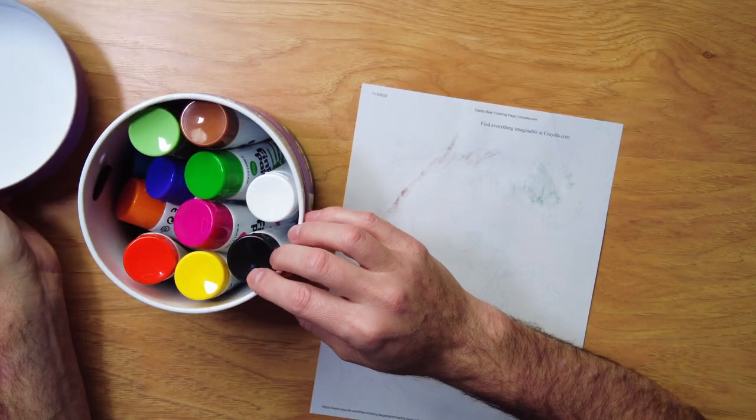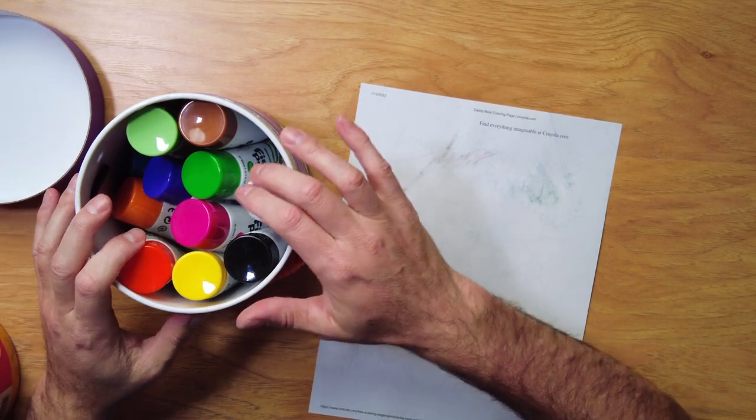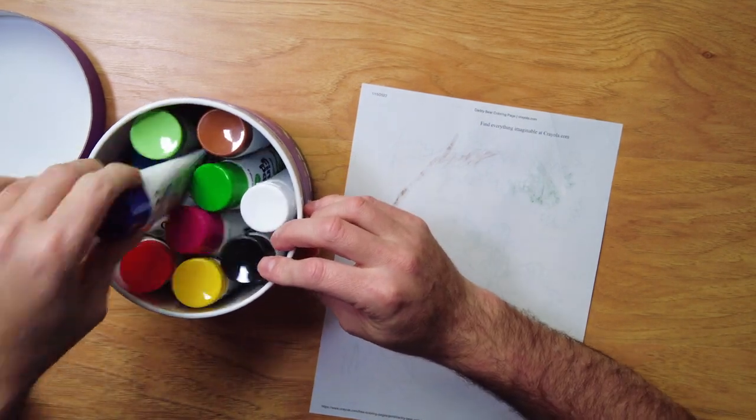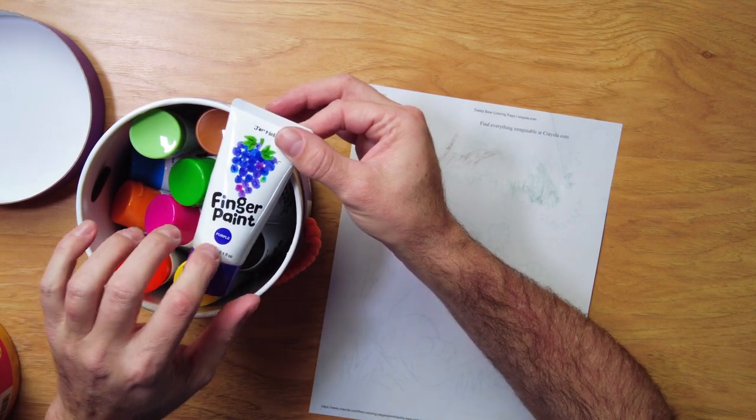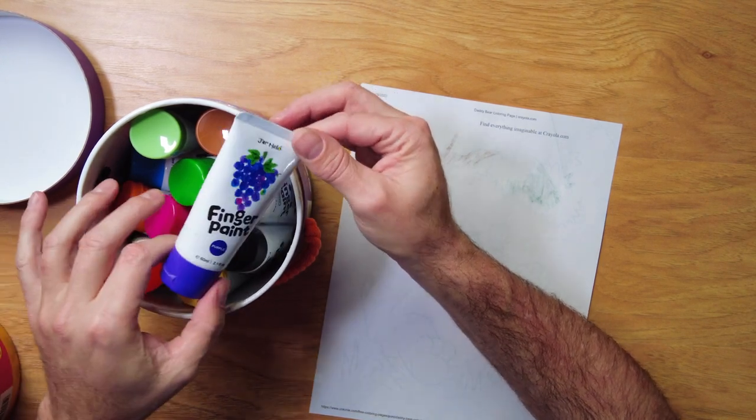Let's open this up and see what's inside. You've got these nice little tubes of finger paints, and it does say the colors on there so the kids can learn the color and the names of the colors.